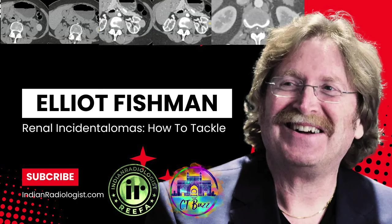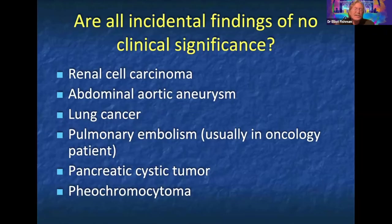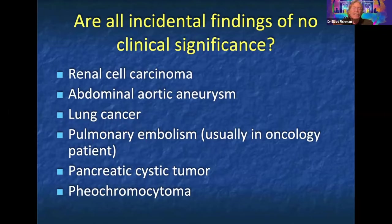There are many things we find incidentally every single day. For example, 60 percent of renal cell carcinomas are incidental findings; PEs occur in 5 percent of oncology patients as incidental findings; pancreatic cystic tumors affect 5-plus percent of the population minimum; and 70 percent of pheochromocytomas are incidental findings — not patients presenting with hypertension.